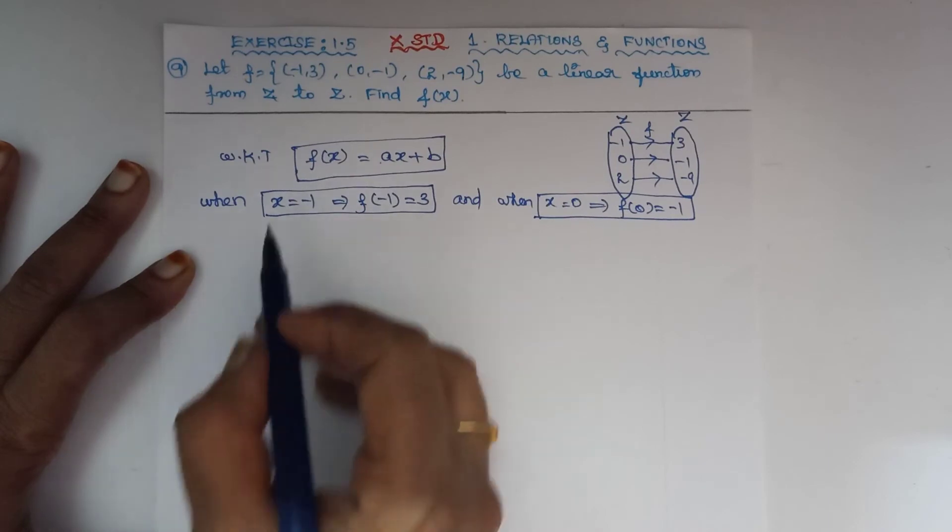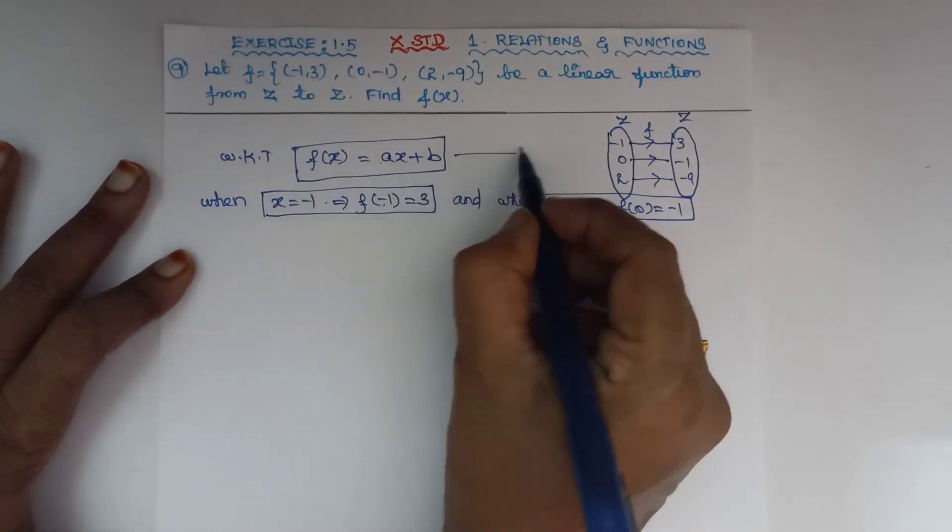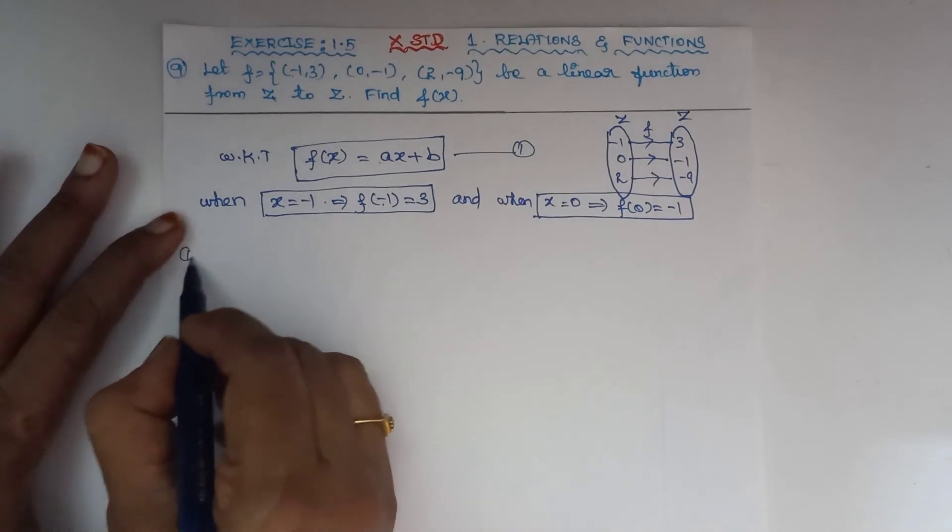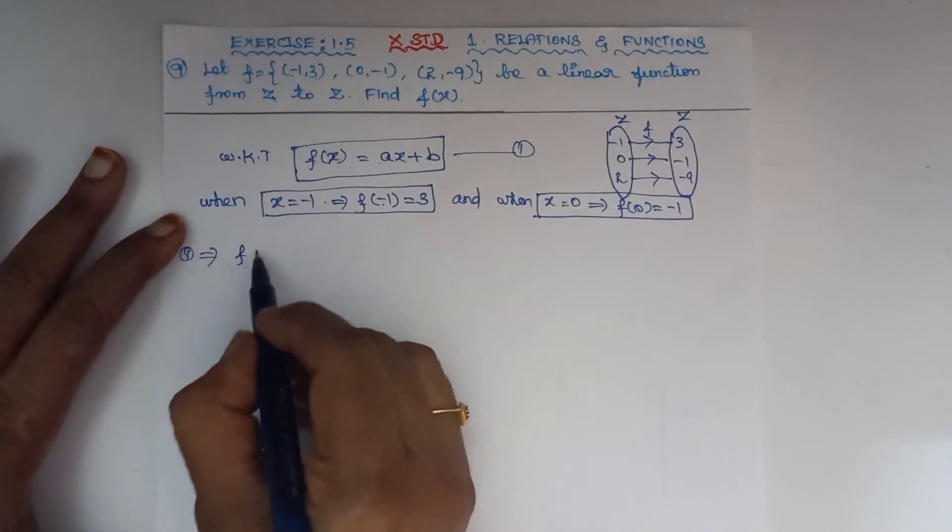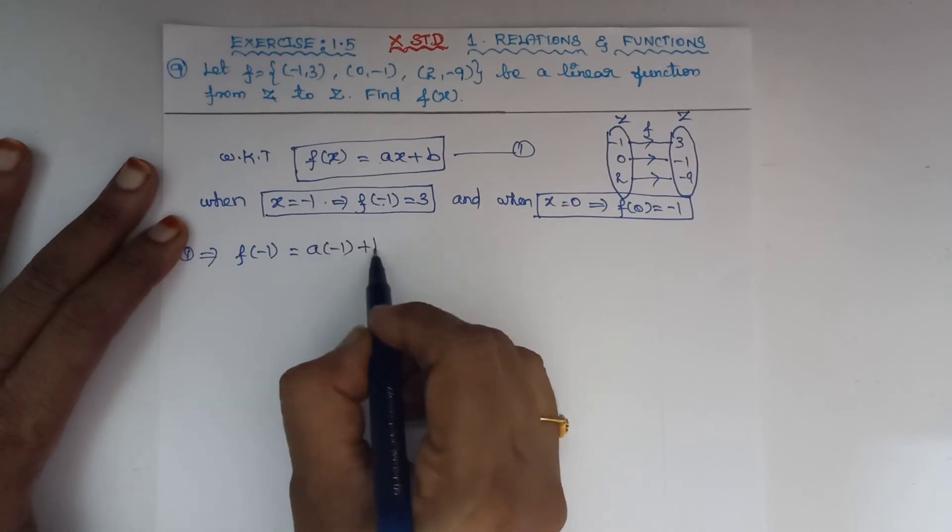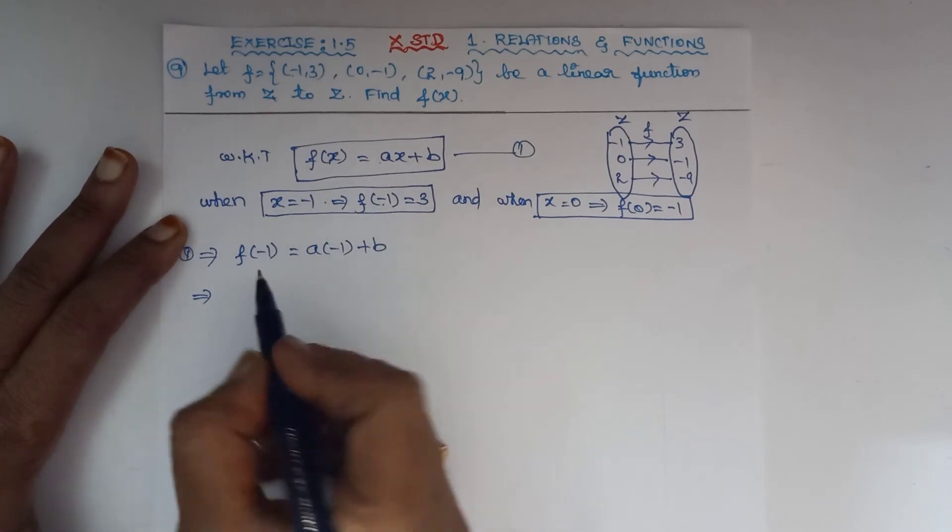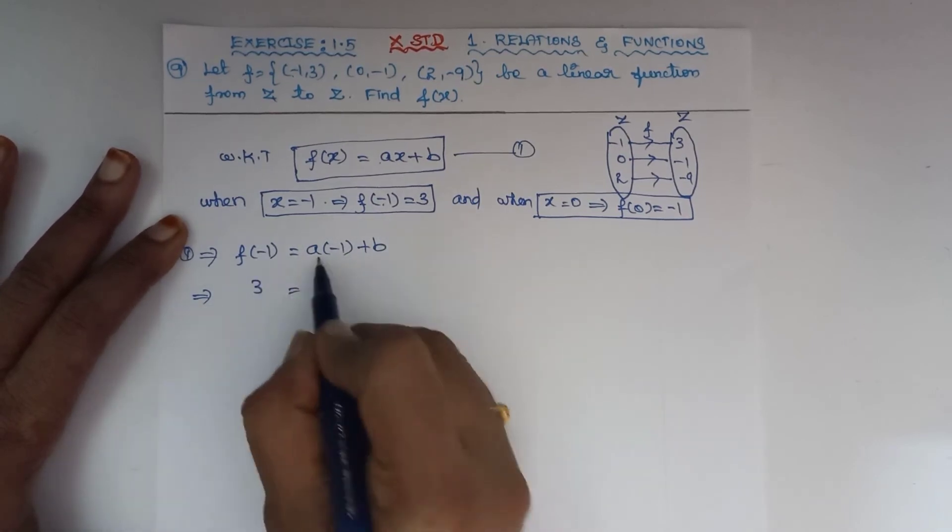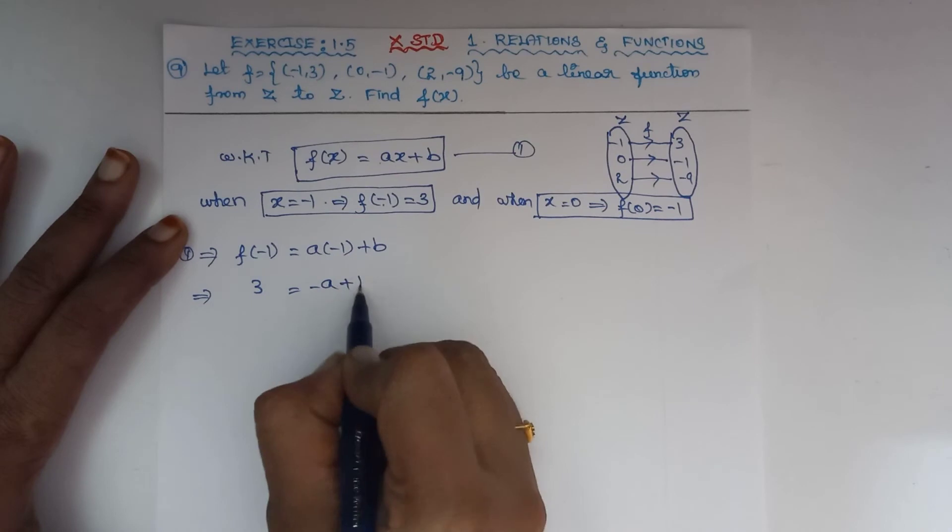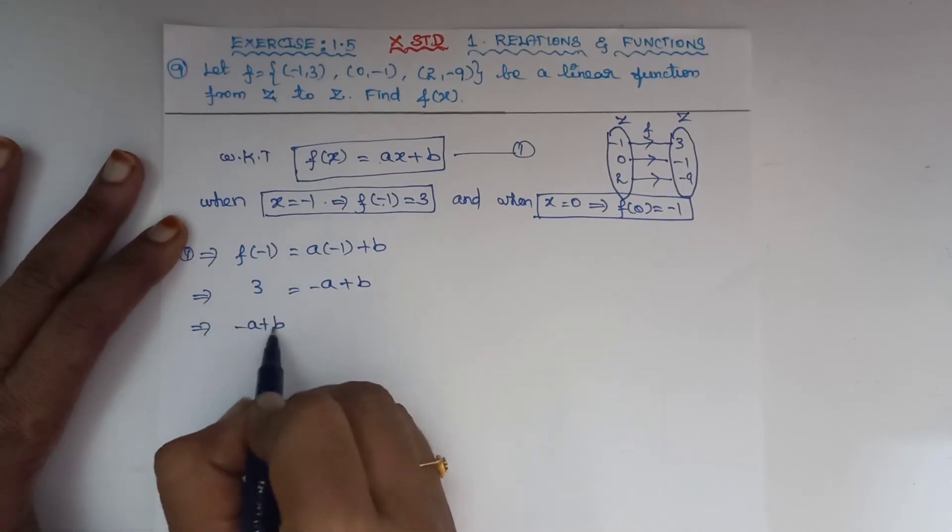Substituting x = -1 into equation 1: f(-1) = a × (-1) + b. Substituting the value f(-1) = 3, we get -a + b = 3, which is equation number 2.